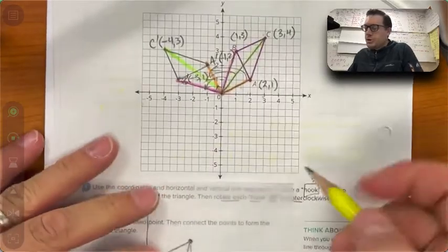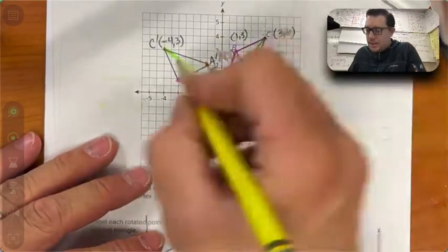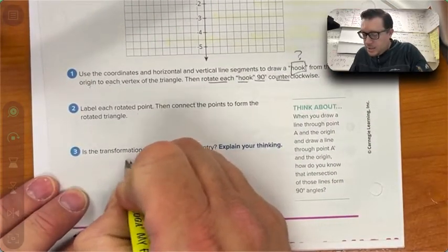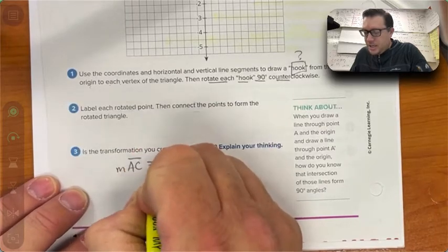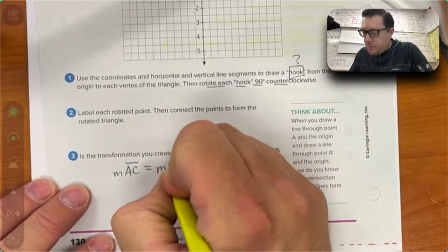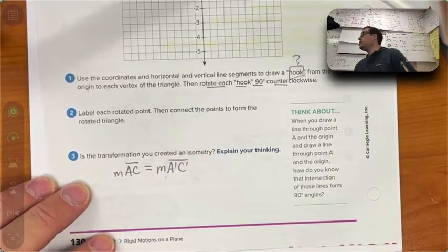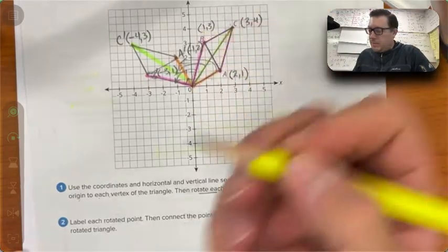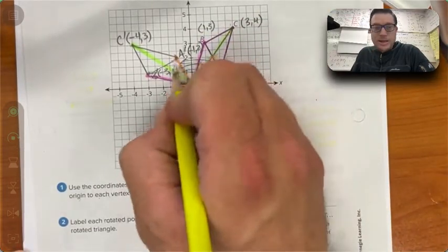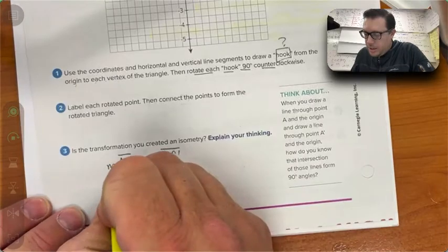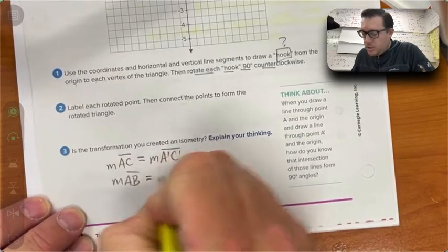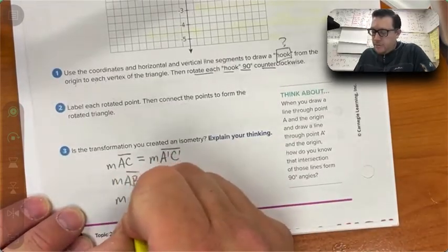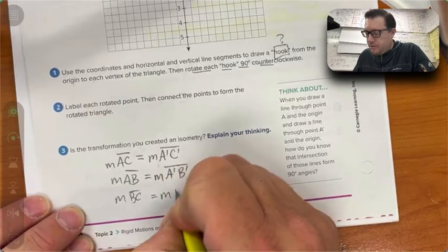That is true for AC and A prime C prime. So I'm going to write down here, the measure of AC is equal to the measure of A prime C prime. Then we're going to go from AB. Same thing, rise and run, it's going to be exactly the same. So the measure of AB is equal to the measure of A prime B prime.